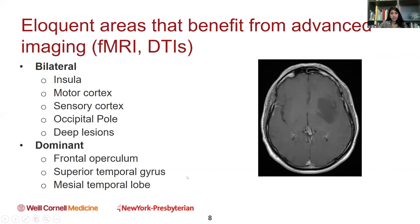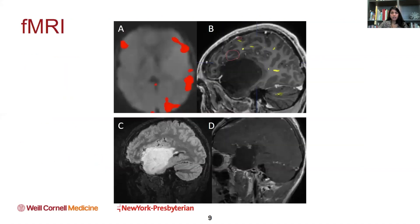On the dominant side, the main areas we talked about: the frontal lobe is where Broca's area is, the temporal lobe is where Wernicke's area is, and the mesial temporal lobe is the hippocampus. This is an example of an fMRI — a patient of mine with a very large tumor.